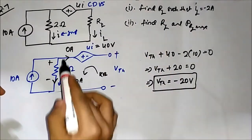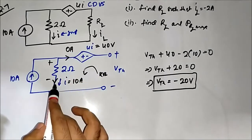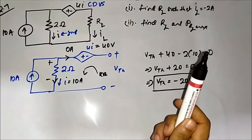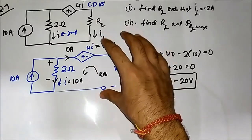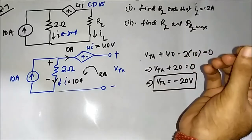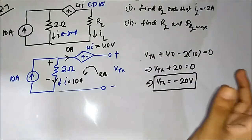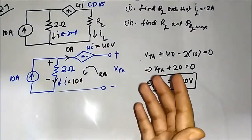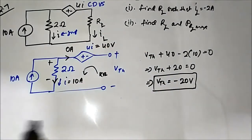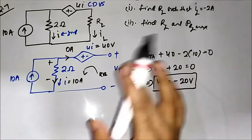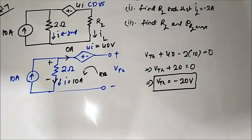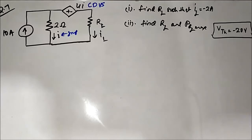The key observation is that since the output is open-circuited, no current flows through that path, so the entire 10 ampere flows through the resistor. This makes the analysis straightforward. Now that we have Vth equals minus 20 volts, we need to find Rth, and then everything will be easy.